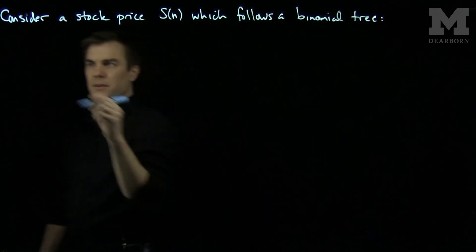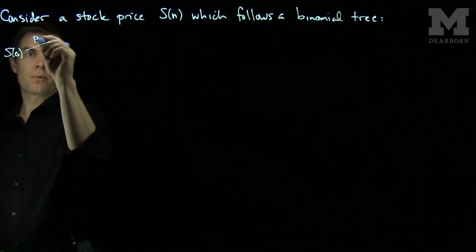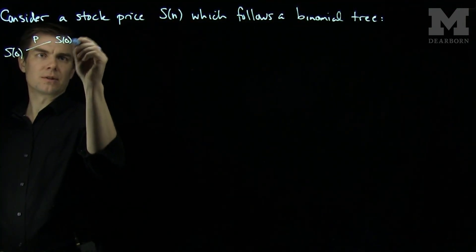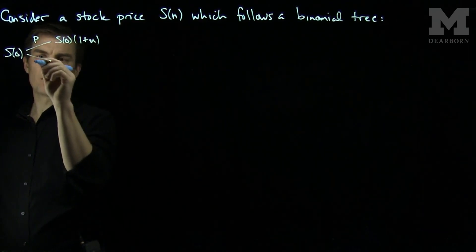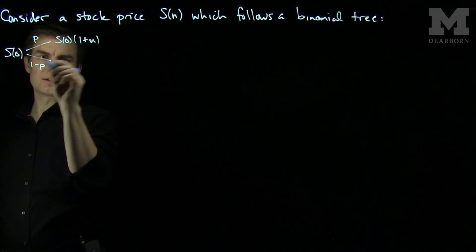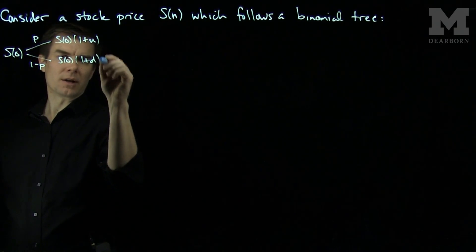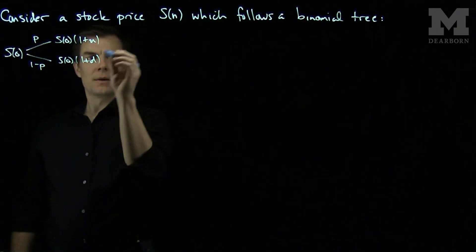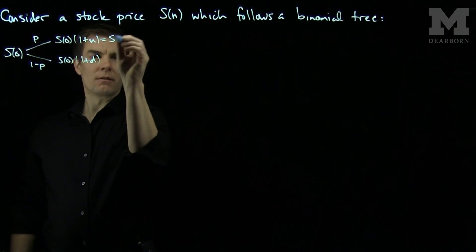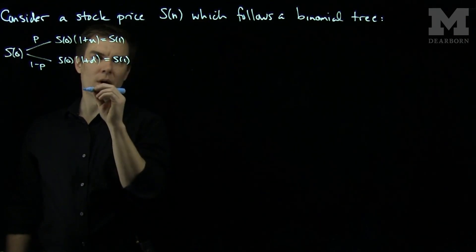What that means is that at time S0, I can either go up with probability p to S0(1+u), or I can go down with probability 1-p to S0(1+d). And these prices are versions of the stock price at time 1.